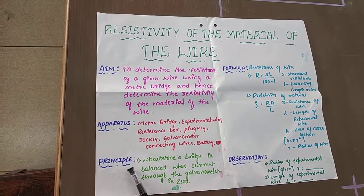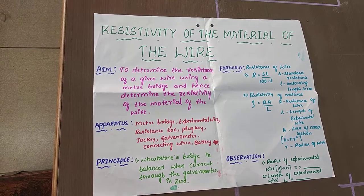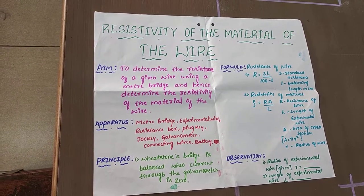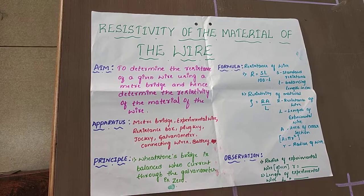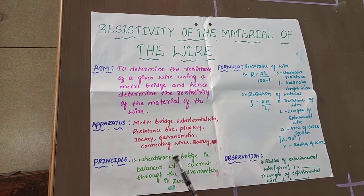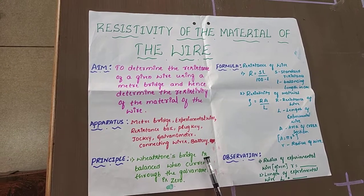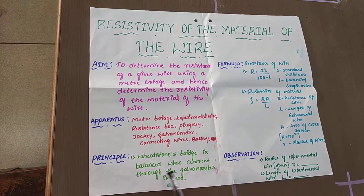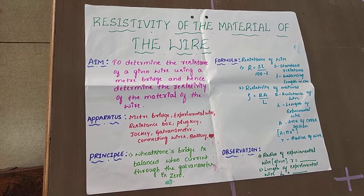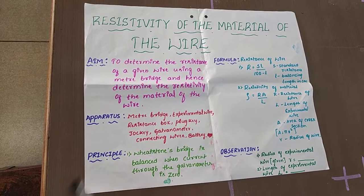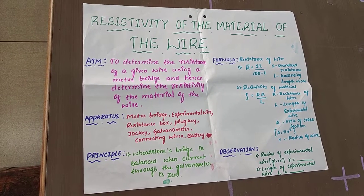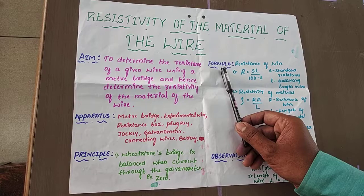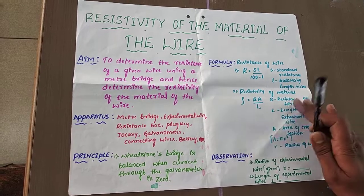The principle of the experiment is that the meter bridge works on the principle of the Wheatstone bridge. The Wheatstone bridge is balanced when the current through the galvanometer is zero. This is the principle of the experiment.